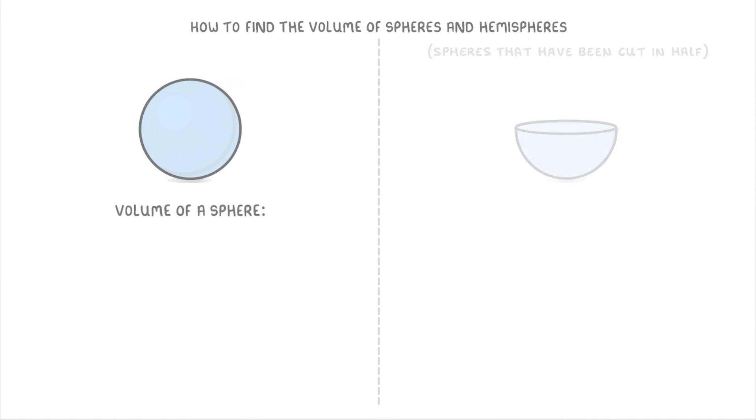To find the volume of a sphere, we use the formula volume equals 4 thirds pi r cubed, where r is the radius of the sphere.